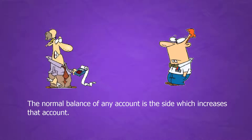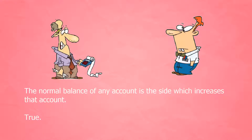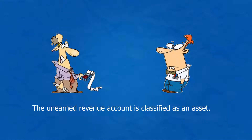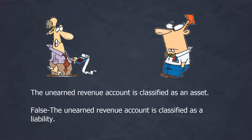The normal balance of any account is the side which increases that account. True. The unearned revenue account is classified as an asset. False. The unearned revenue account is classified as a liability.